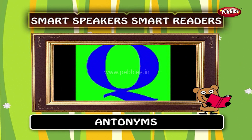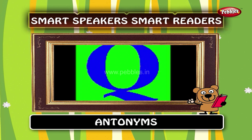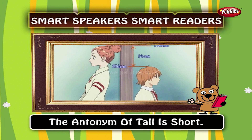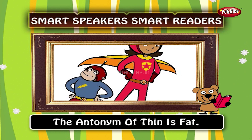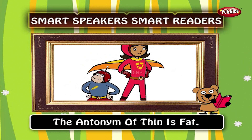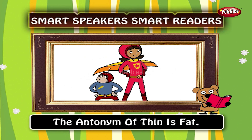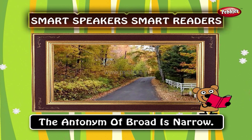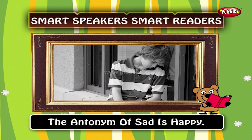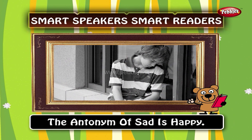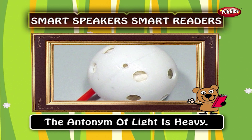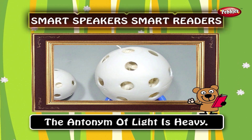Let us learn the antonyms of a few words. The antonym of tall is short. The antonym of thin is fat. The antonym of broad is narrow. The antonym of sad is happy. The antonym of light is heavy.